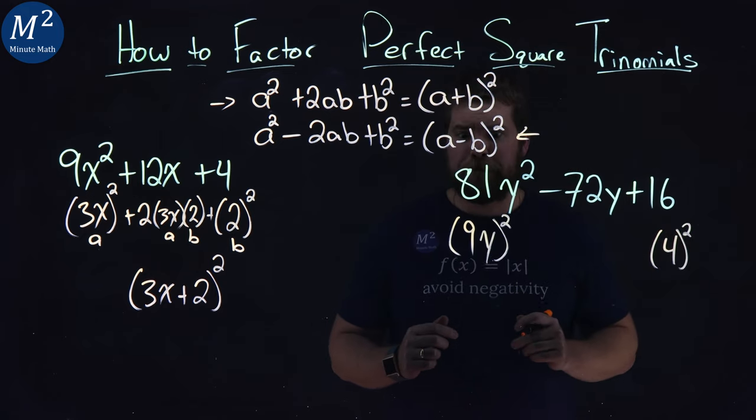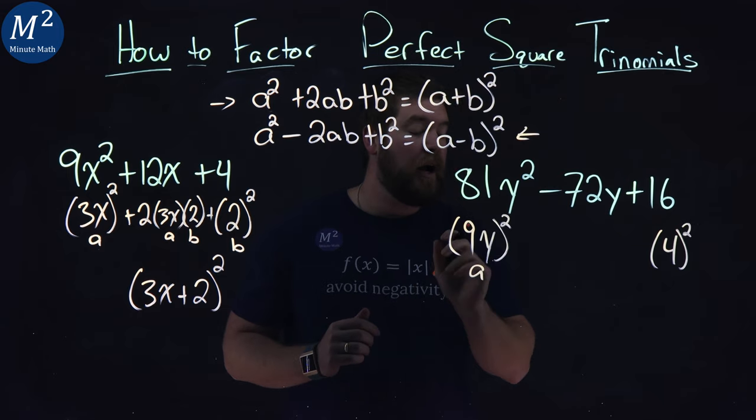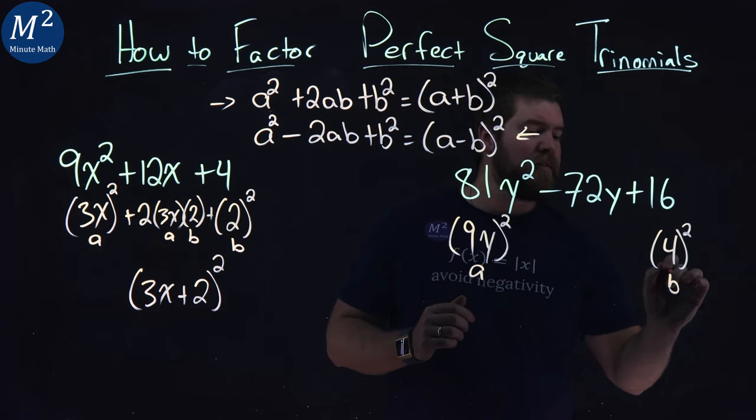Right, 4 squared is 16. So in this case, our a value is going to be 9y, and our b value is 4.